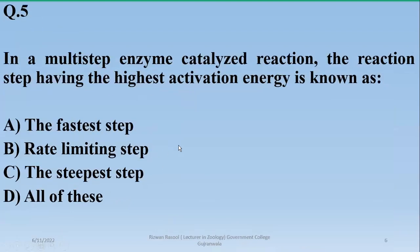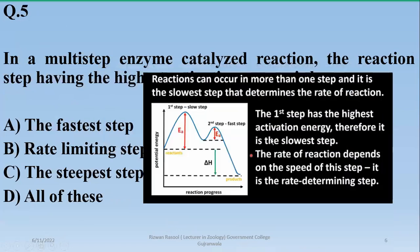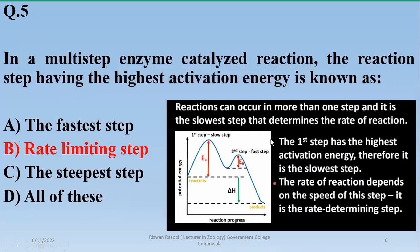Number five: in a multi-step enzyme-catalyzed reaction, the reaction step having the highest activation energy is known as the rate-limiting step — so beta is the right option. In any reaction, the slowest step that determines the rate of reaction is also the one having the highest energy, which we identify as the rate-limiting step.